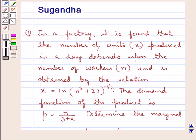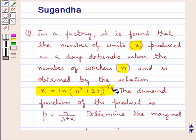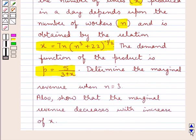Hello and welcome to the session. In this session we discuss the following question: In a factory, it is found that the number of units x produced in a day depends upon the number of workers n and is obtained by the relation x = 7n(n³ + 22)^(−1/2). The demand function of the product is p = 5/(3 + x). Determine the marginal revenue when n = 3.